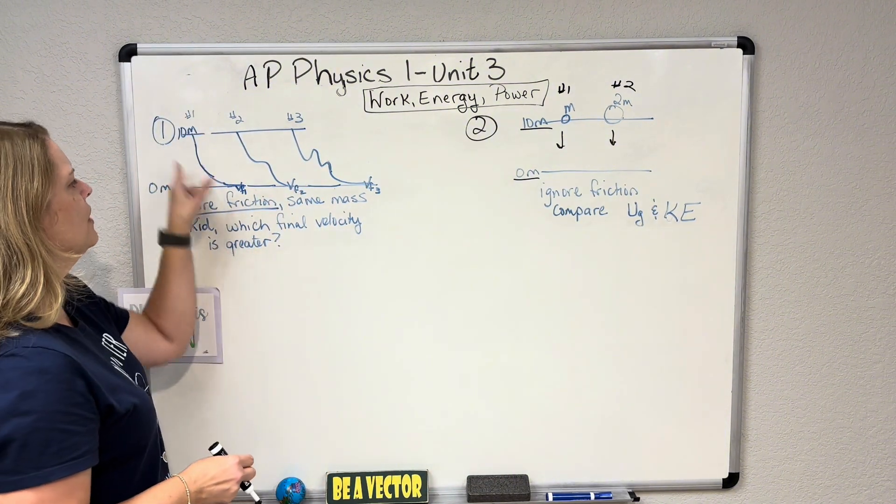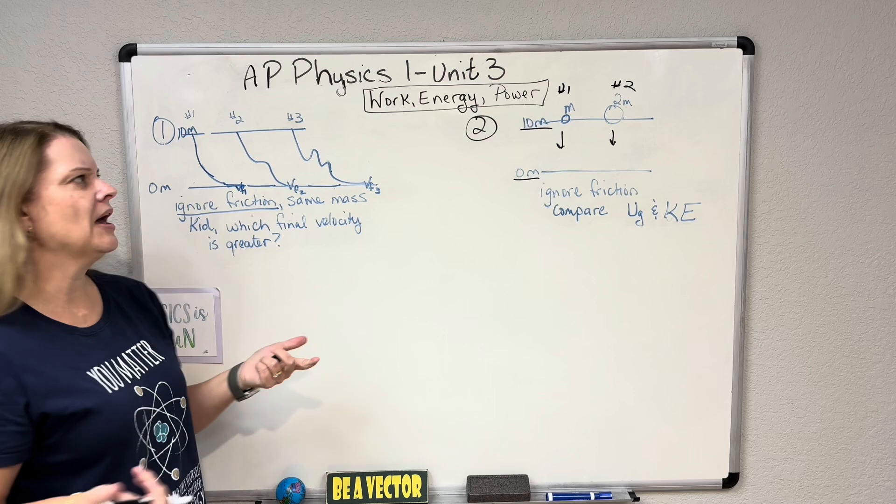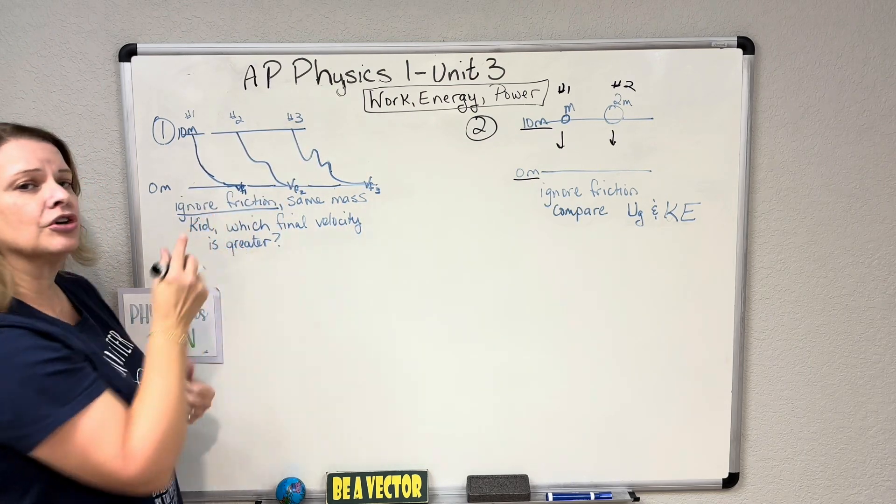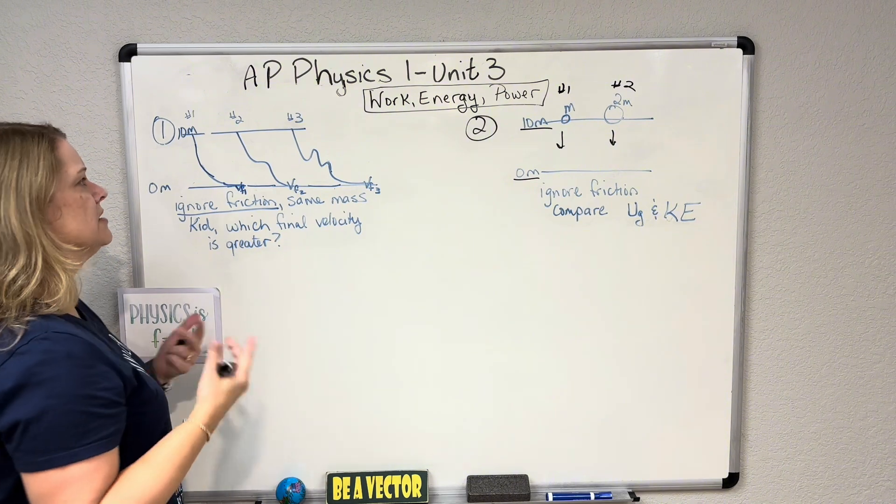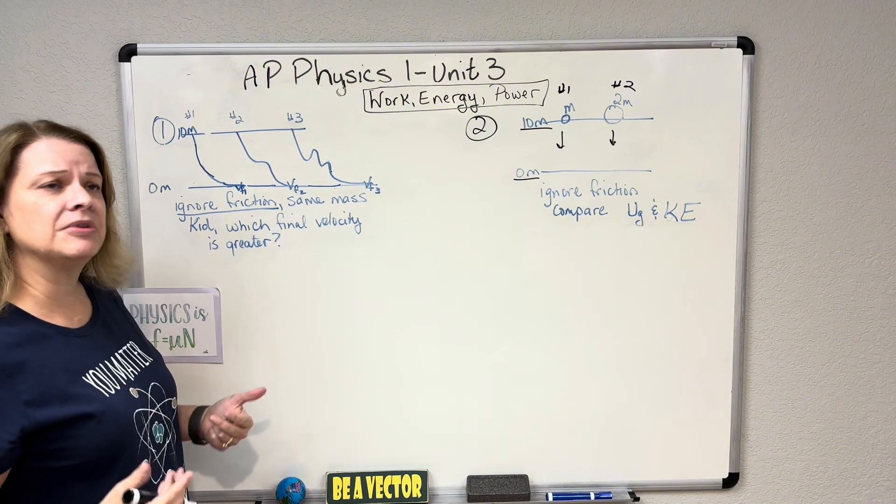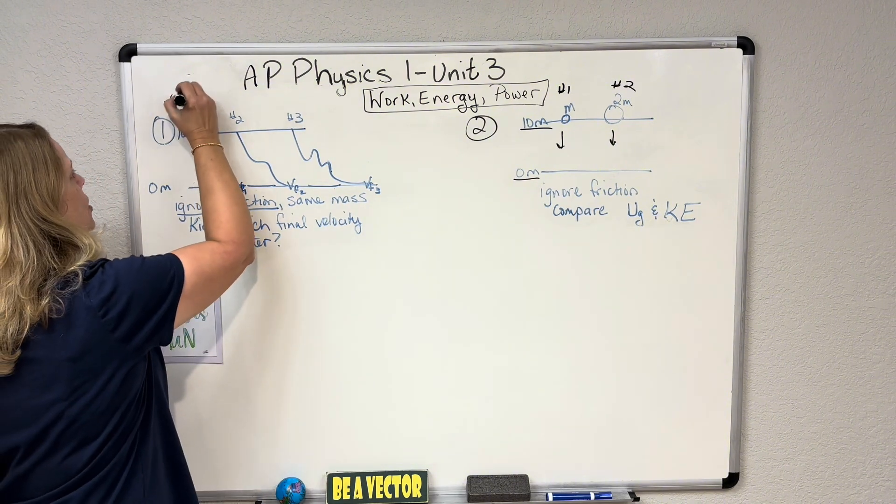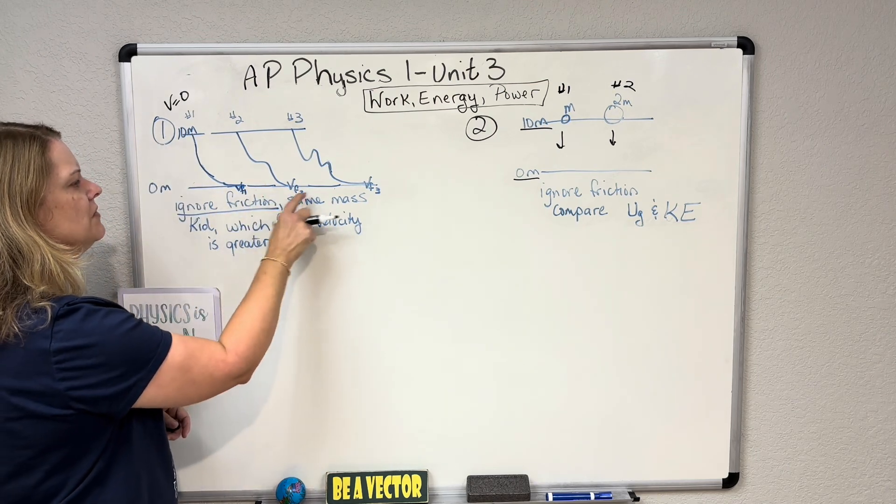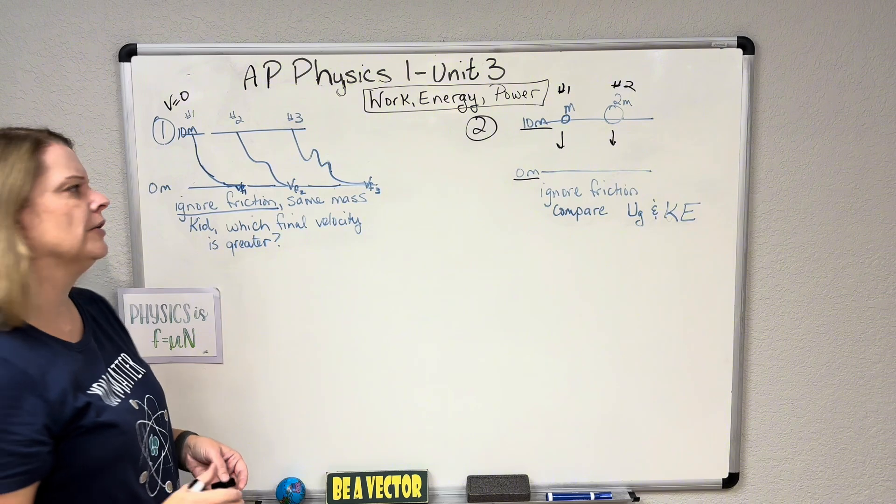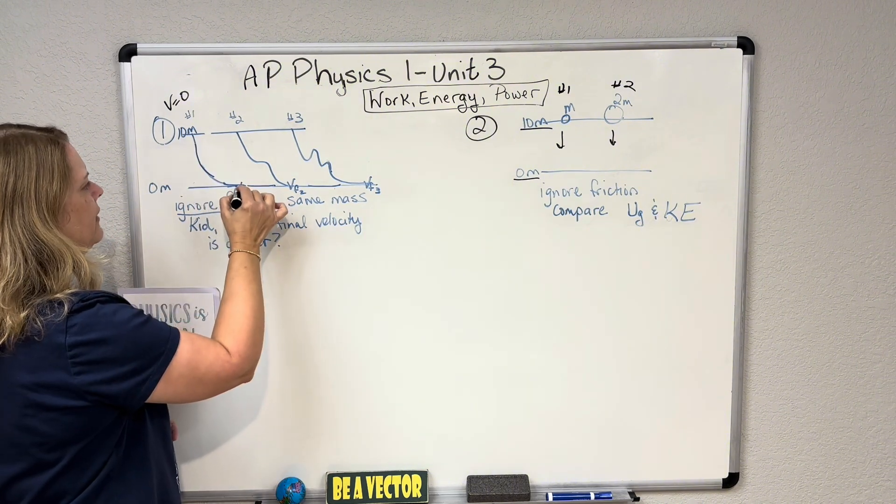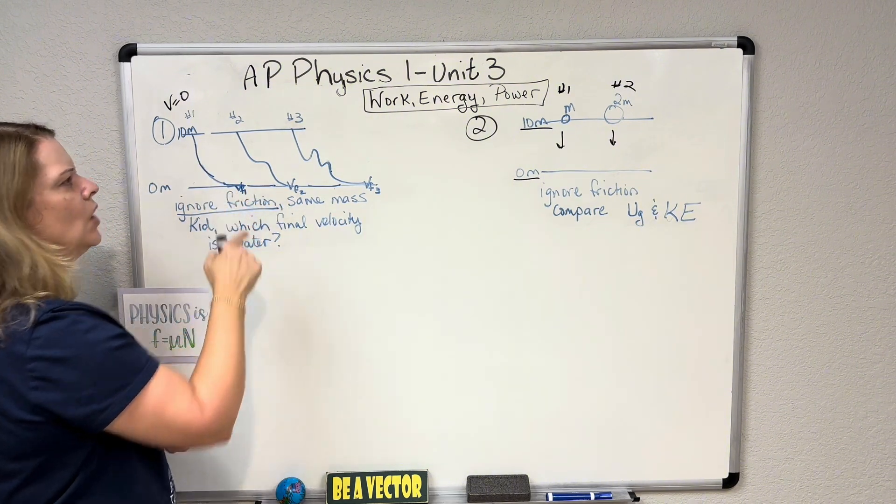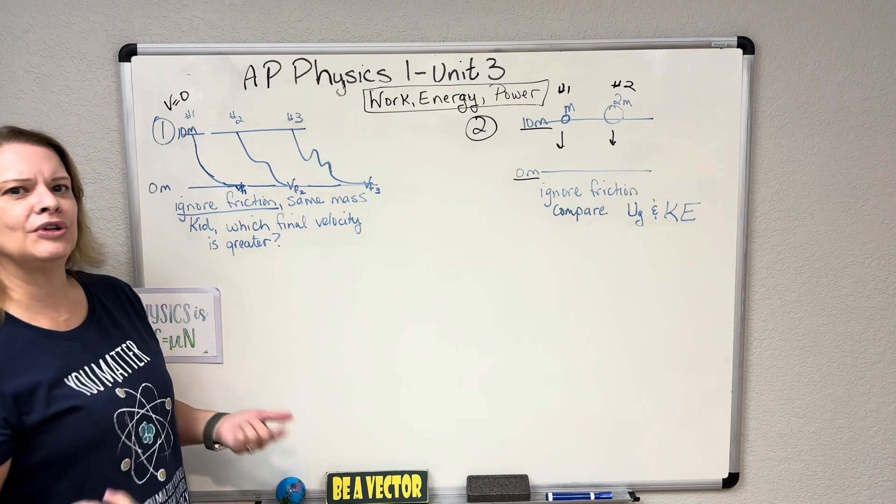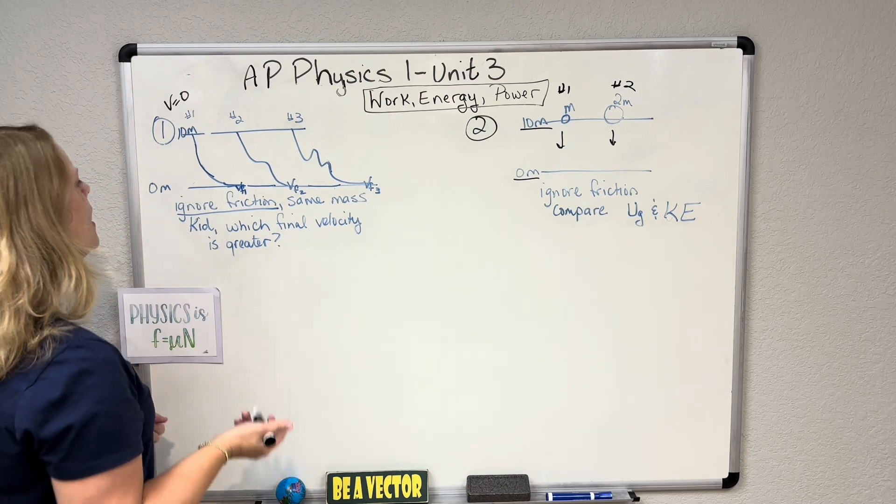We have problem one. We have three slides in different paths here. We have one, two, and three of the slides. We're going to ignore friction, the problem tells us. It's the same mass kid. He's going to set up at the slide and he's at rest when he starts. And then he comes down the slide. Here's what they're asking. Which of these final velocities is greater?